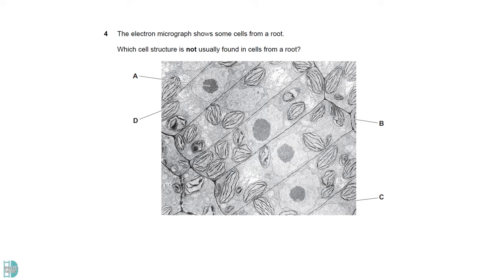Let's identify these structures first. A is the nucleus. B is the chloroplasts. C is the cell wall. D is the nuclear envelope. Root cells would not have chloroplasts as they do not need to carry out photosynthesis.